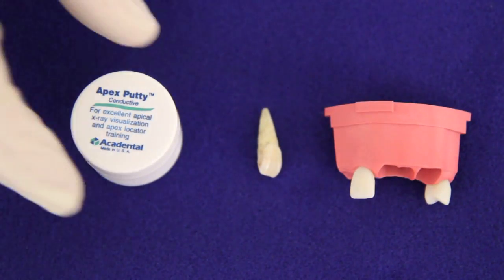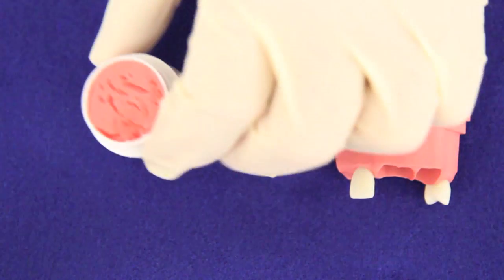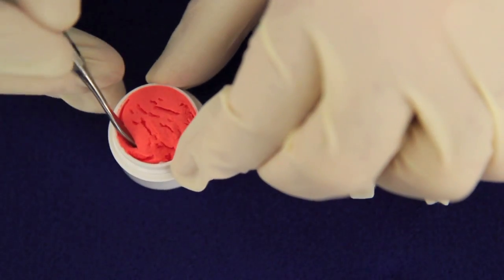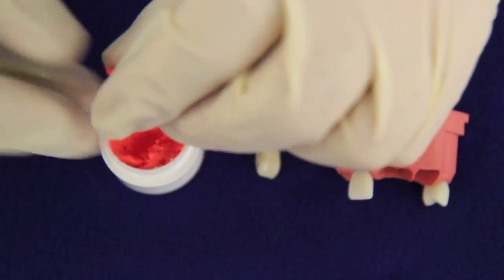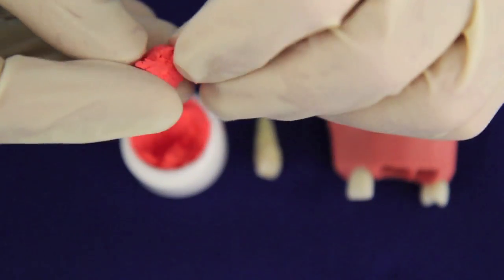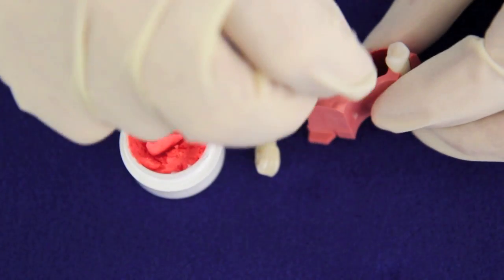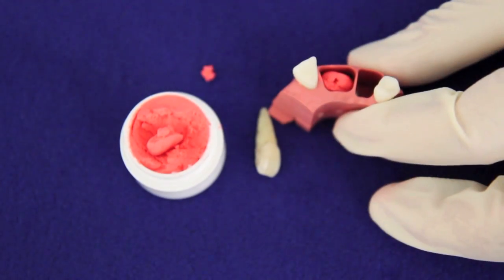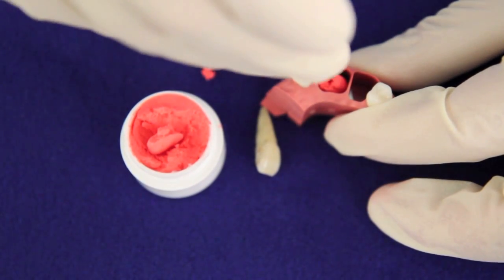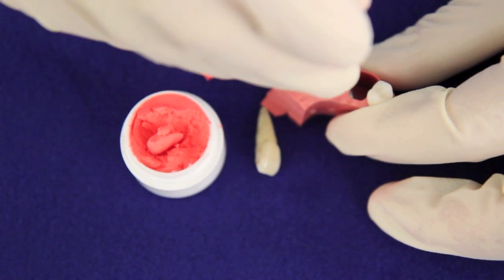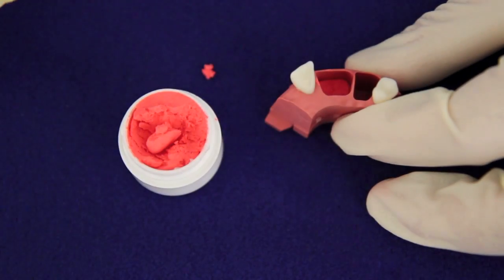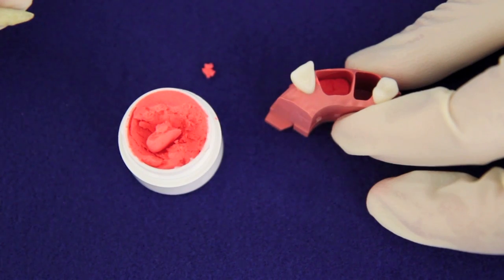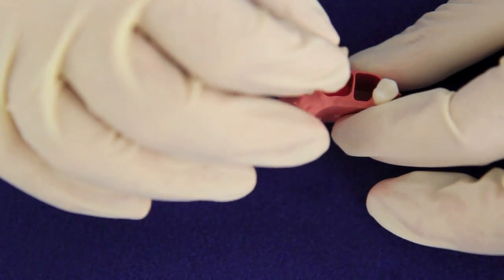Now we're going to make a ball of apex putty. Now I'm going to tap it in place to the bottom of the slot with the end of a mirror handle. My aim is to have the bottom three millimeters of the root embedded in the apex putty.